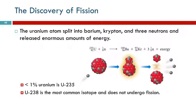When you do that to uranium-235, it breaks into barium-140 and krypton-93, and it does emit neutrons and also a tremendous amount of energy. Less than 1% of uranium is this uranium-235. 238 is the most common isotope. It does not undergo fission. It's uranium-235 that does.